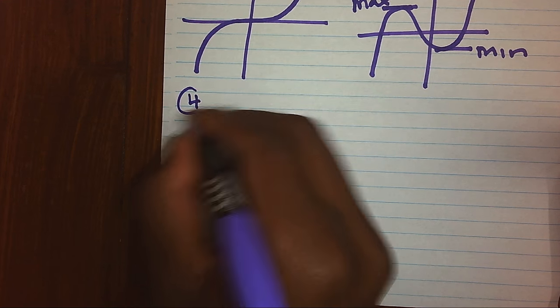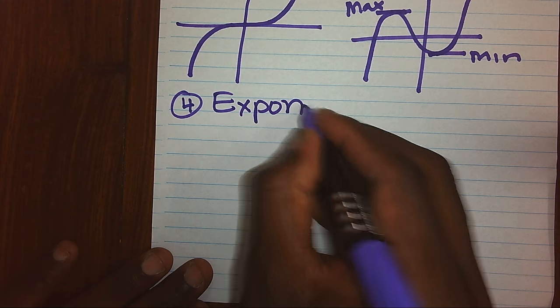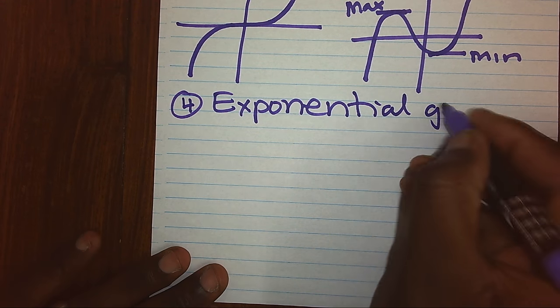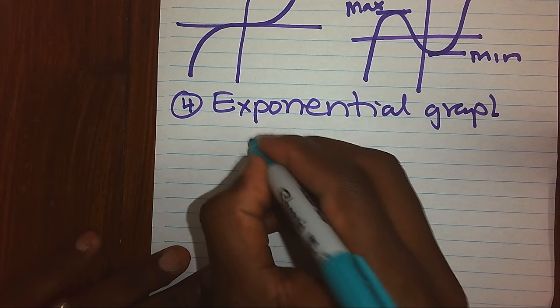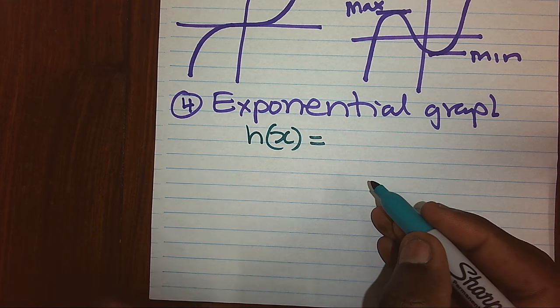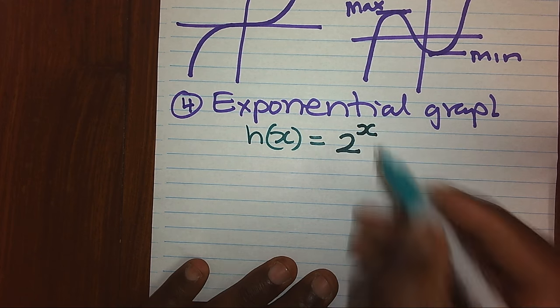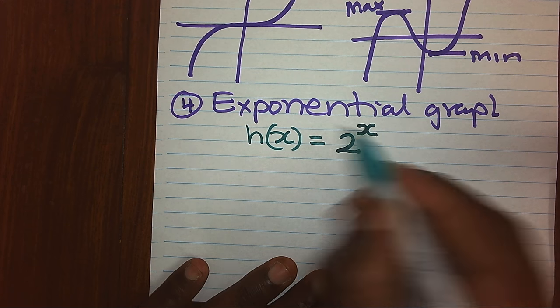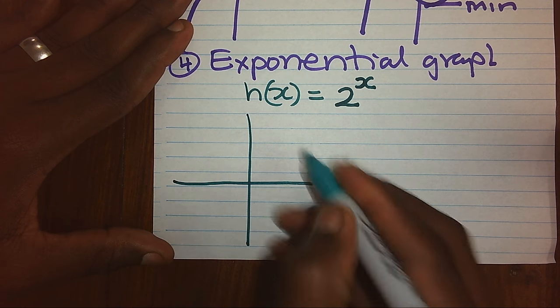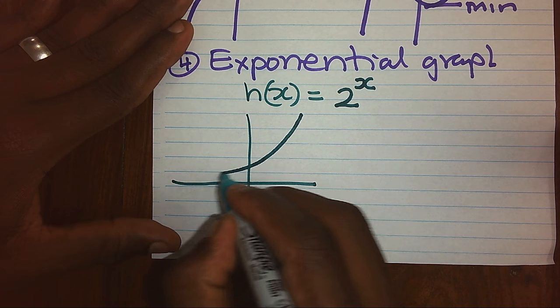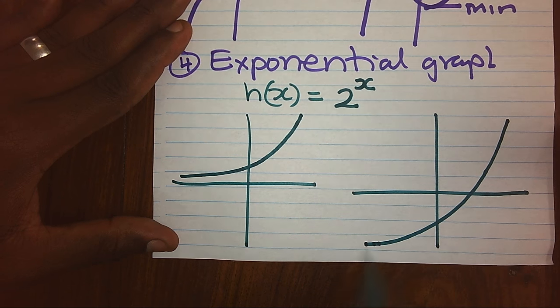We have another type of graph that we call an exponential graph. An exponential graph could be h of x equals something, where the unknown is part of the power or exponent. Whenever we see the unknown as part of the power, it represents an exponential graph. The nature of an exponential graph appears usually like an L shape.